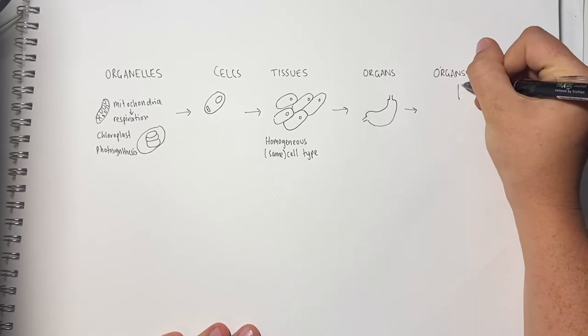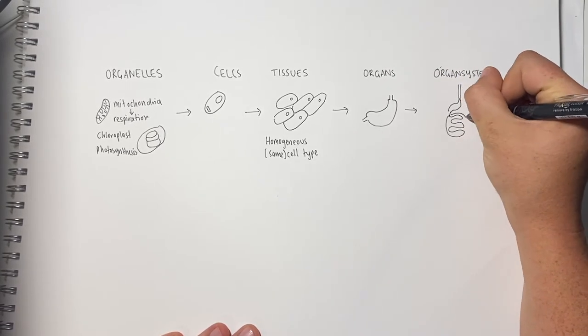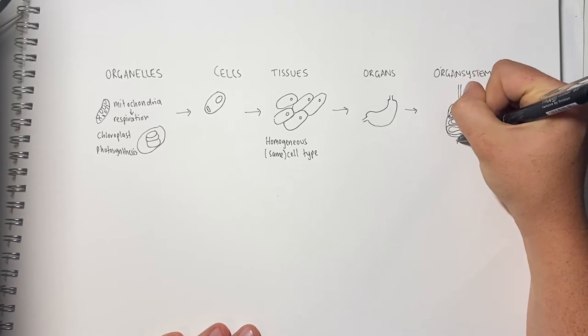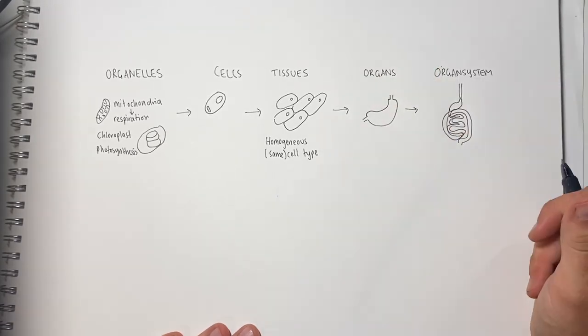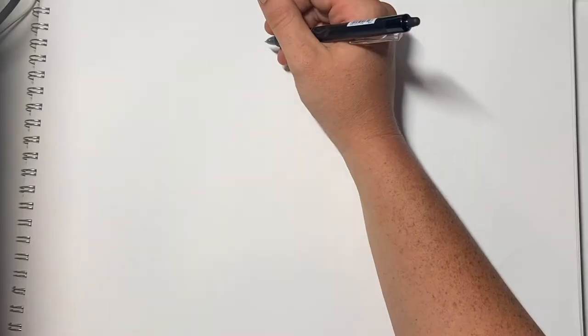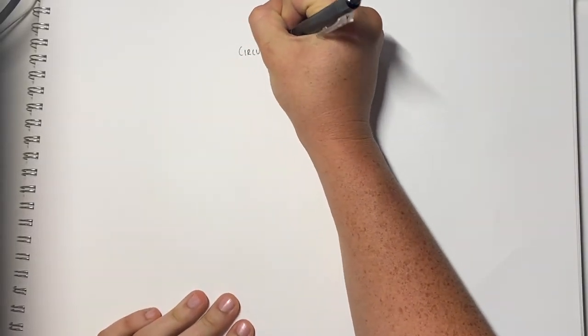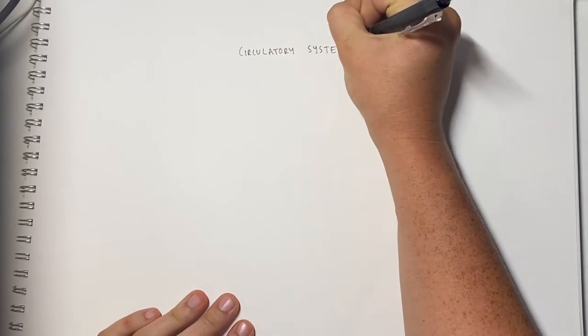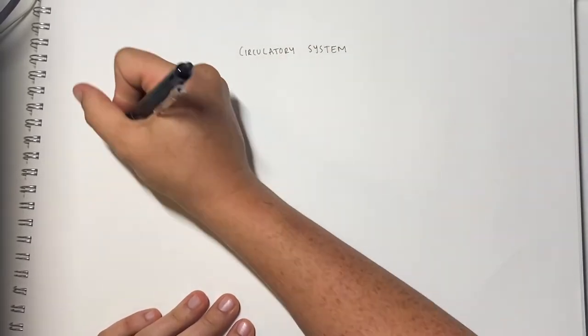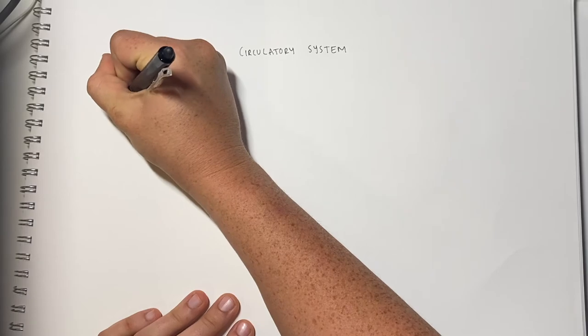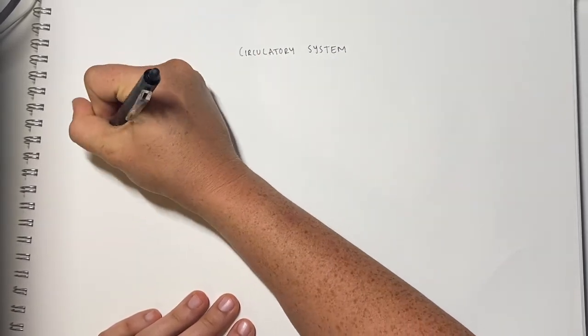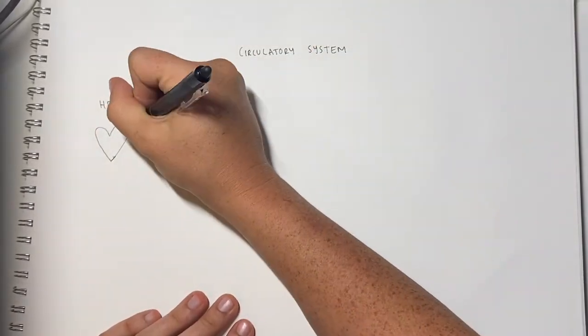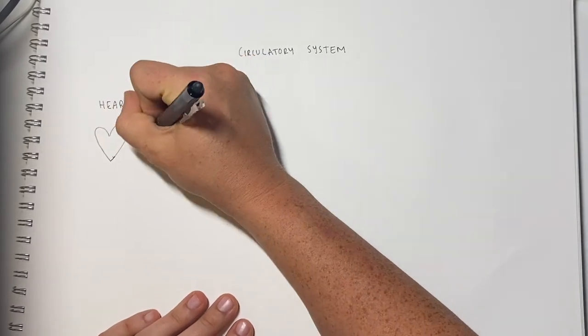Now let's look at an example of how hierarchical structures of an organism can be structured. The circulatory system is responsible for delivering oxygen and nutrients to cells and taking away waste. It has a series of organs and tissues that are part of this system. Firstly, let's look at the heart. The heart's role is to pump blood through the body. The heart is made of cardiac muscle and nervous tissue. The muscle tissues contract and release involuntarily, which makes the muscle tissue distinctly different from skeletal muscle that you'd use in your arm that you control.